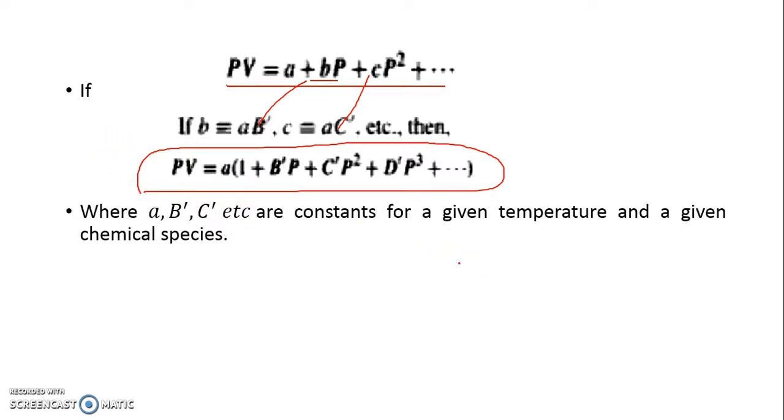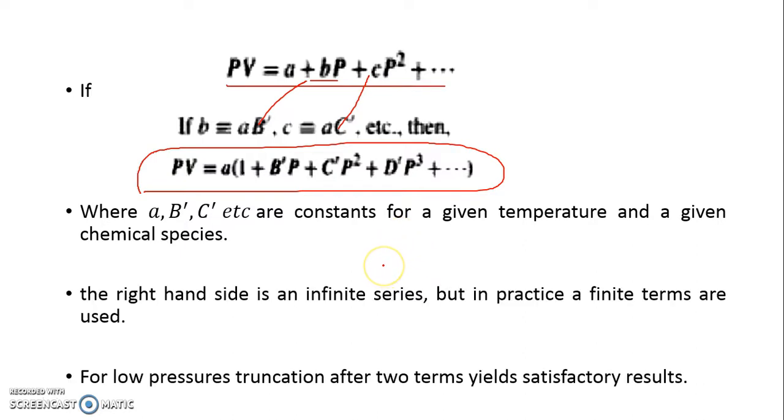We can take out A common and the equation becomes PV equals A times (1 plus B'P plus C'P² plus D'P³). Here A, B', C' are constants for a given temperature and given fluid. The right-hand side is an infinite series, but in practice we can restrict it to finite terms, maybe 2 or maximum 3.